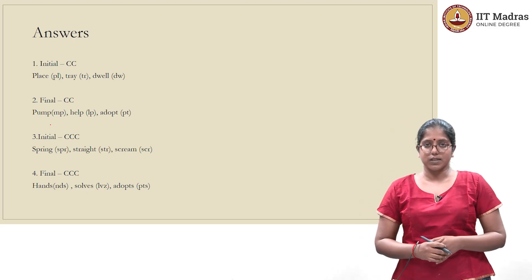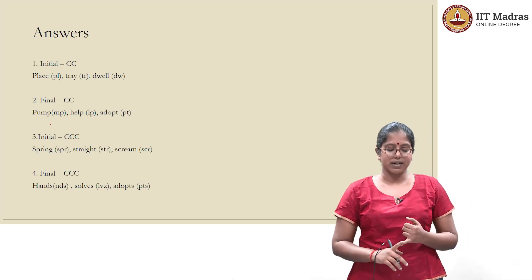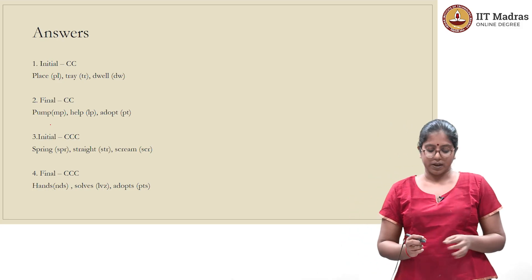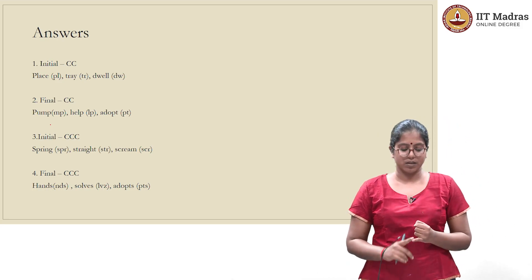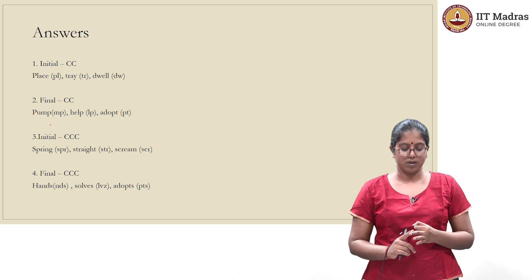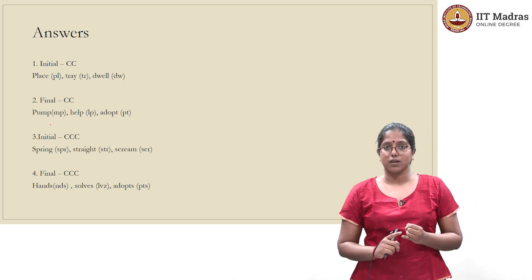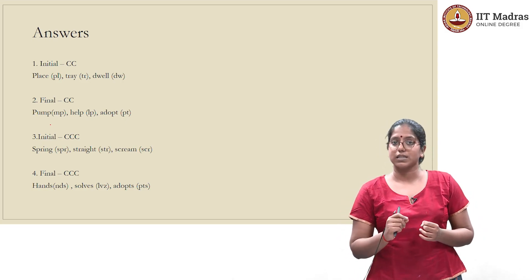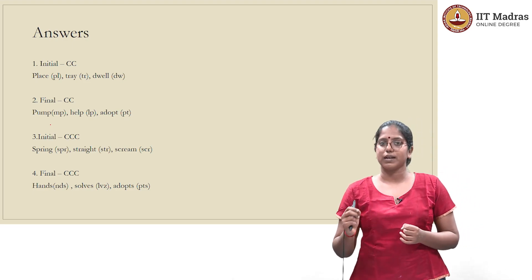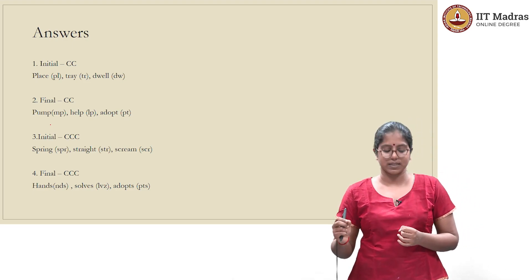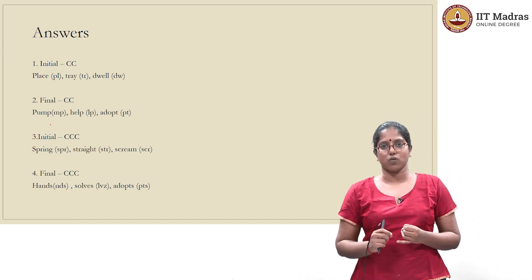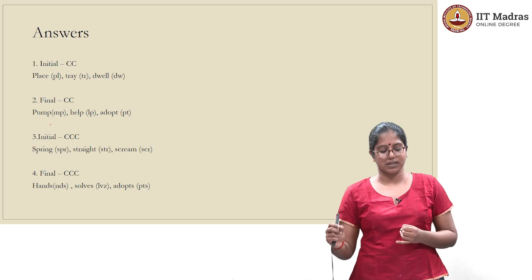The first set is words with an initial consonant cluster CC. I have chosen place, tray, and dwell. In place, the consonant cluster is CC — it starts with a 'p' and 'l' sound. In tray, it is a 't' and 'r' sound. Again, the consonant cluster CC.